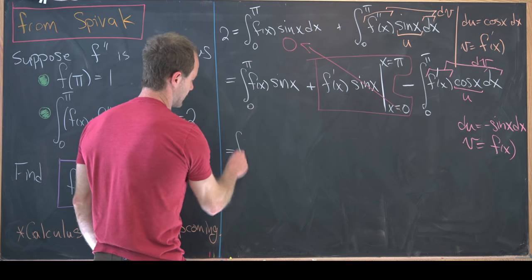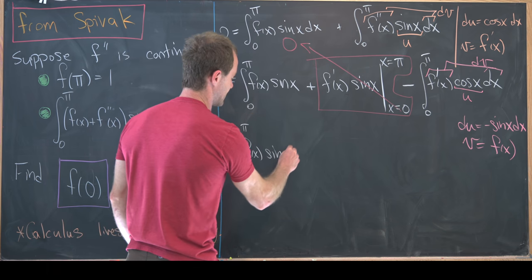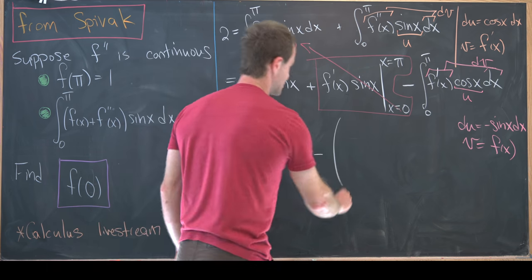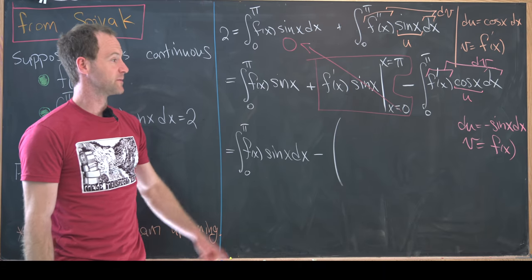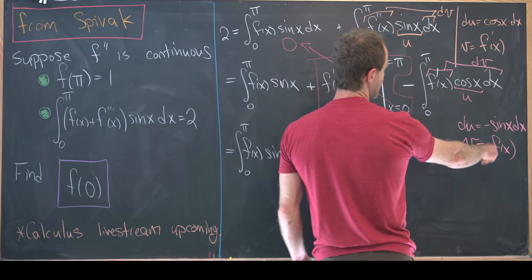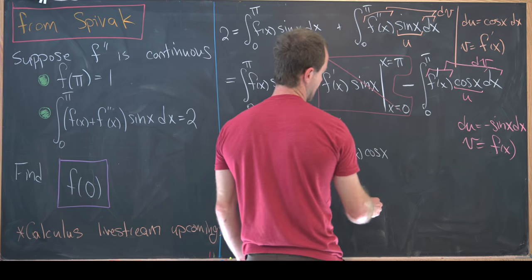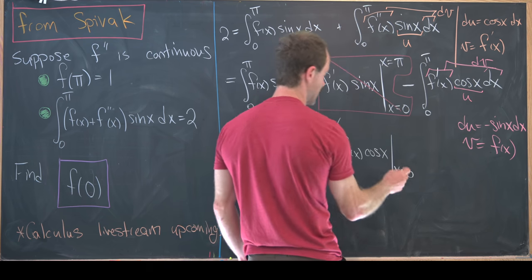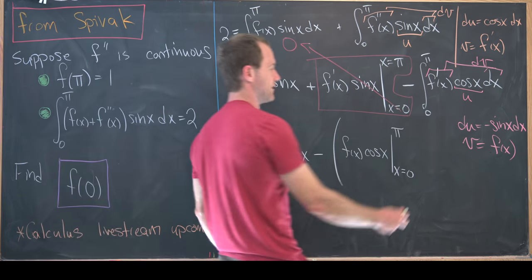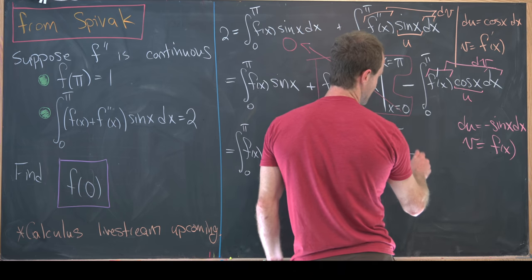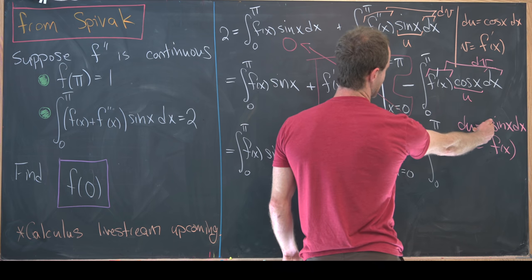Now we've got the integral from zero to π of f(x) times sin(x) dx minus all of this stuff which we're calculating with integration by parts. So it's going to be minus vu. That is f(x) times cos(x) evaluated from x equals zero up to π. And then we have minus the integral of vdu, but that's going to be minus the integral from zero to π of f(x) times -sin(x).